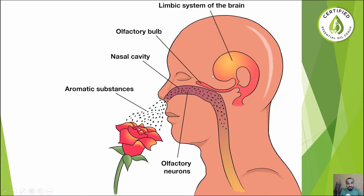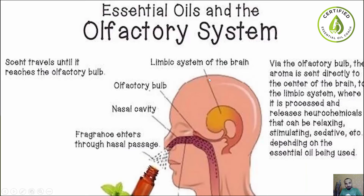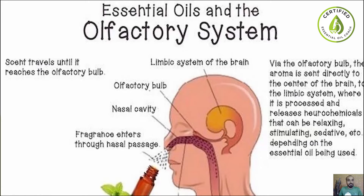Essential oils can come in through your nasal passage and go right to the brain, affecting it directly, which is very unique. As you can see in this picture of the olfactory system, when you smell these essential oils they travel through your nasal passage where the aroma is sent directly to the center of the brain and to the limbic system, where it processes and releases chemicals.